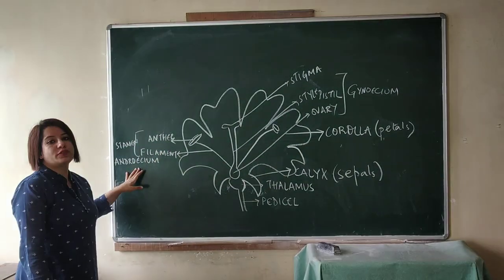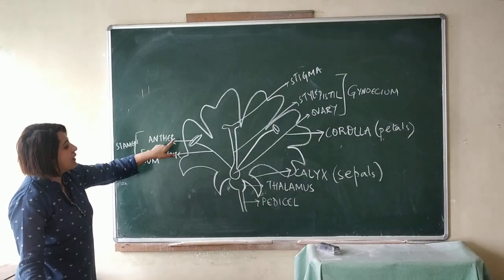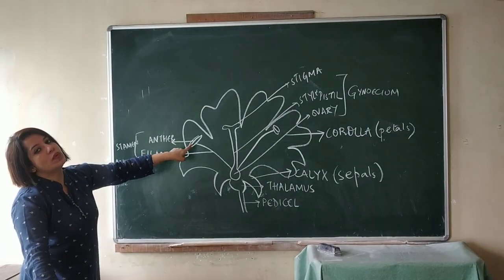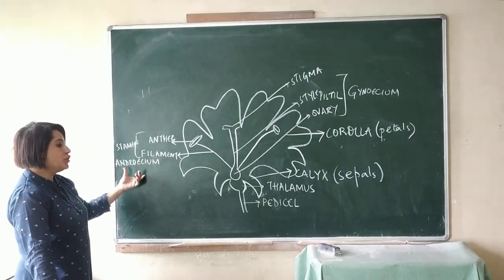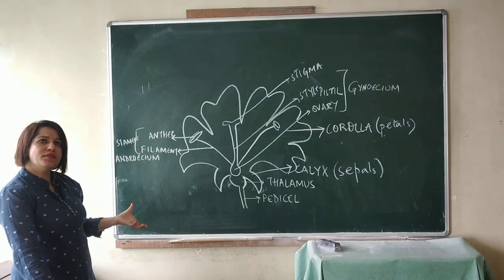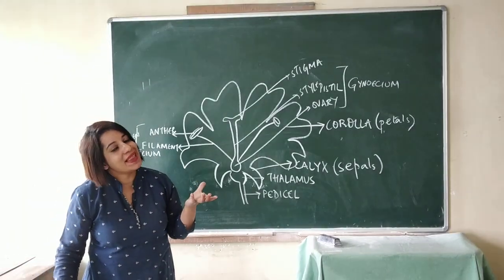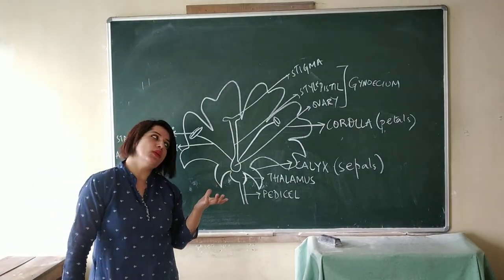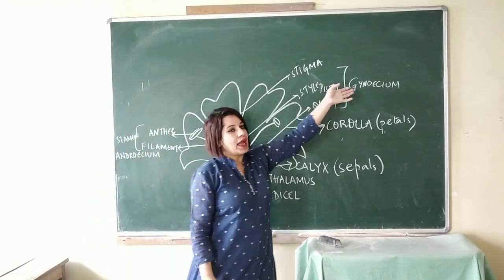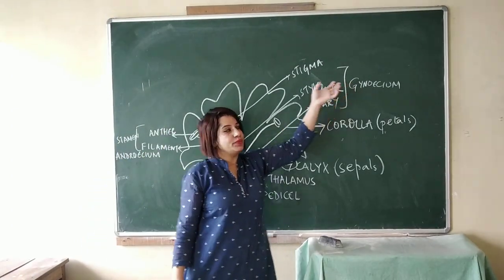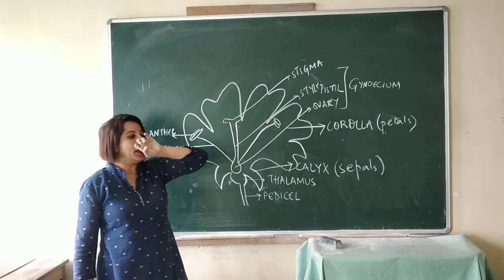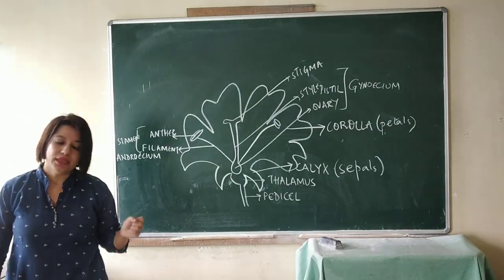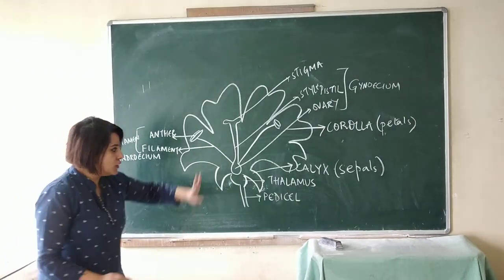The androecium is the male part of the flower. The anther produces the pollen grains. So the androecium helps in the production of the male gamete, that is the pollen grains. The gynoecium helps in the production of the female gamete, that is the ovules.